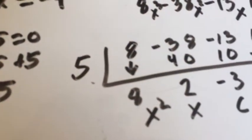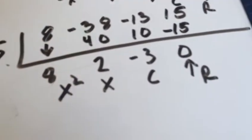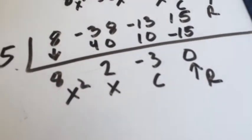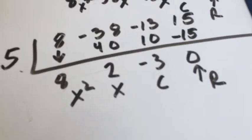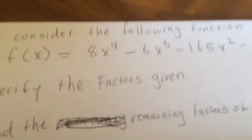Take what you got there, and then divide it further by the 5 to get to 8x squared plus 2x minus 3. Because that is factorable. This is not factorable.